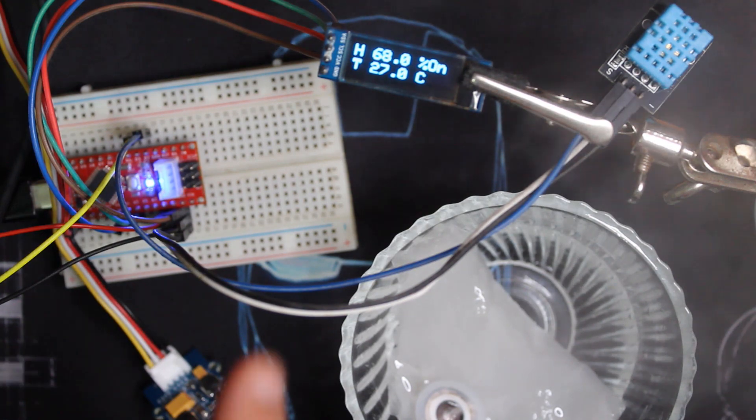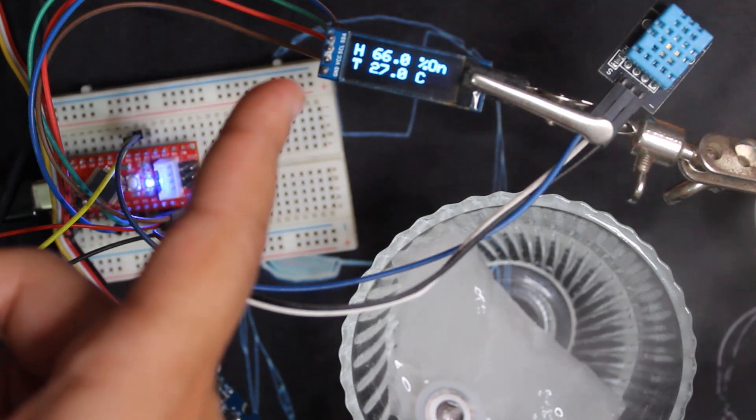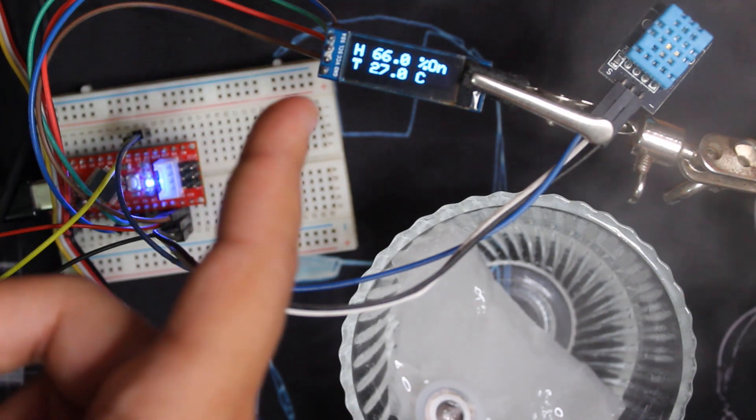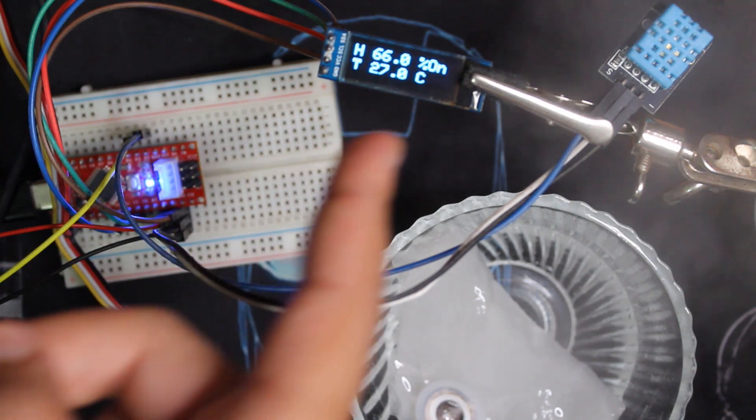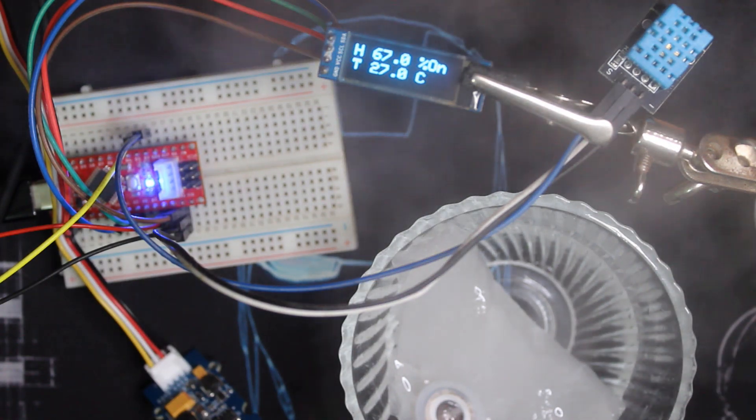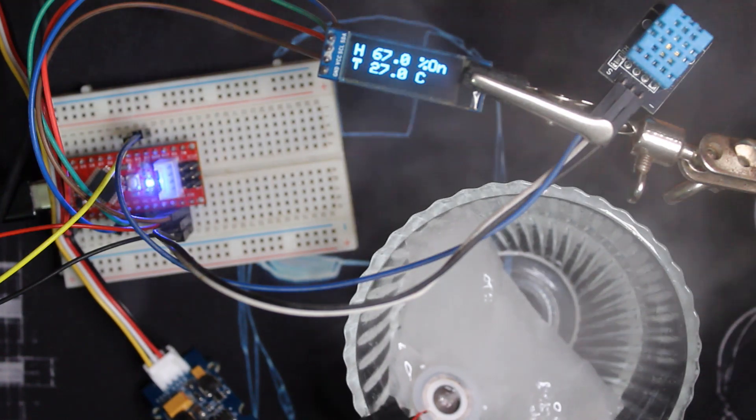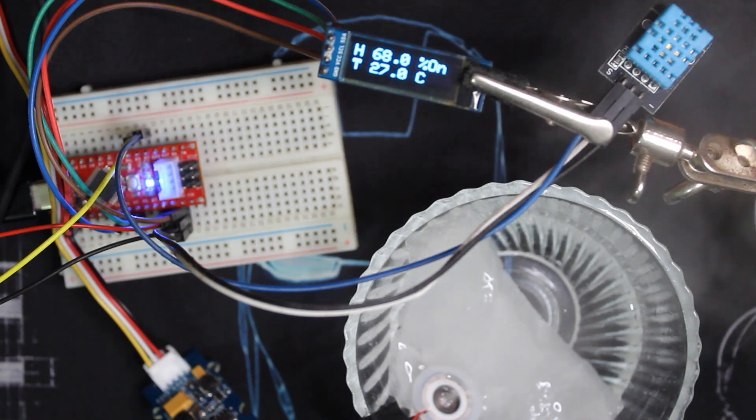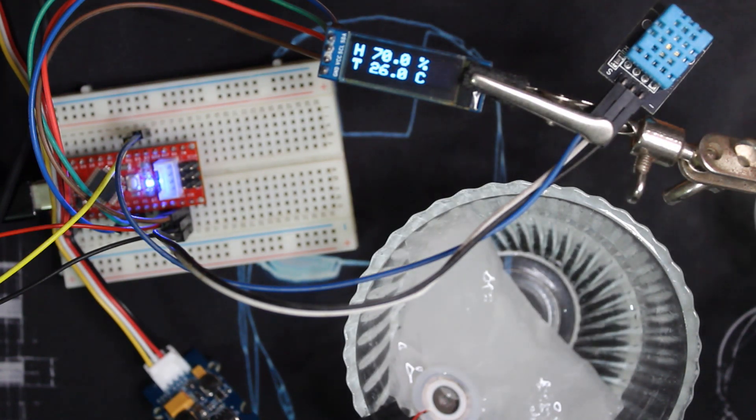As you can see, I have the temperature and the current humidity of this room. As long as it's below 70 as I set it, it will print 'on' here and the atomizer will be on until it reaches that value. If it becomes equal to or higher than 70, it will stop automatically.